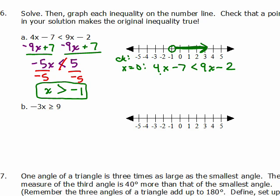If you put in 0 for x — it's an easy number to plug in — I get 0 minus 7, so that's negative 7, and 0 minus 2 is negative 2. Is negative 7 less than negative 2? Yes, so it checks, meaning this is the correct solution: x is greater than negative 1.